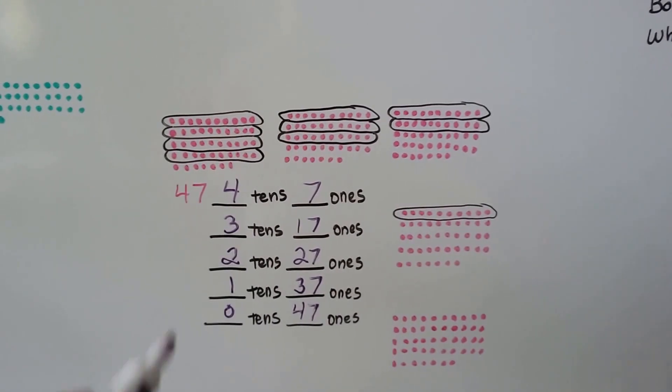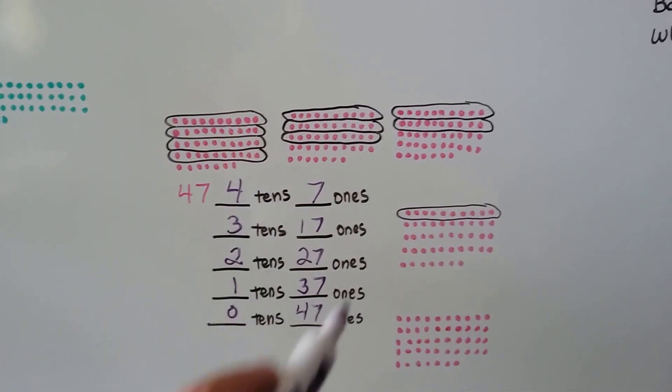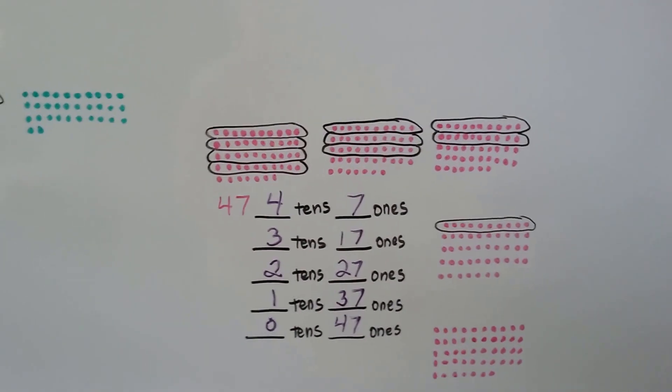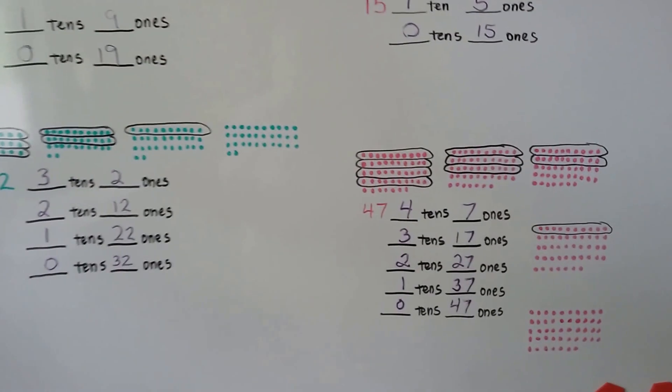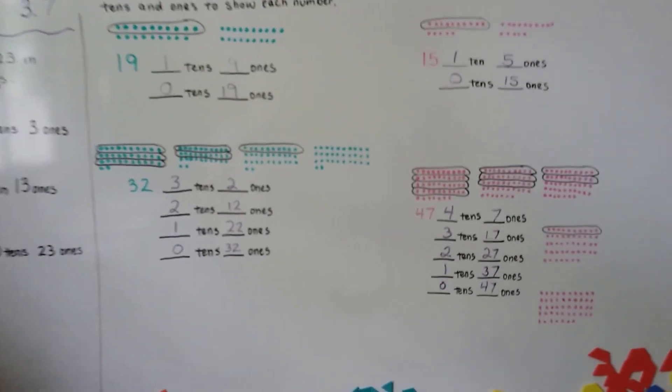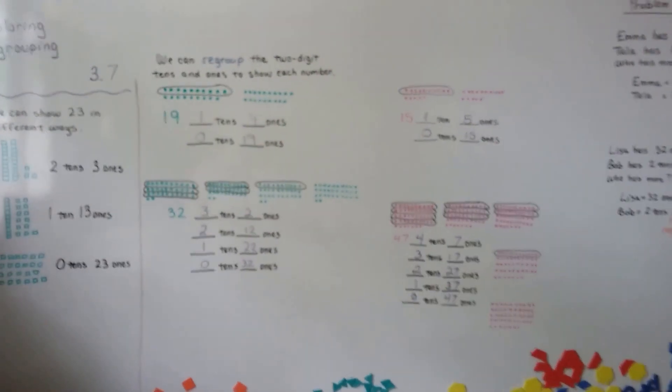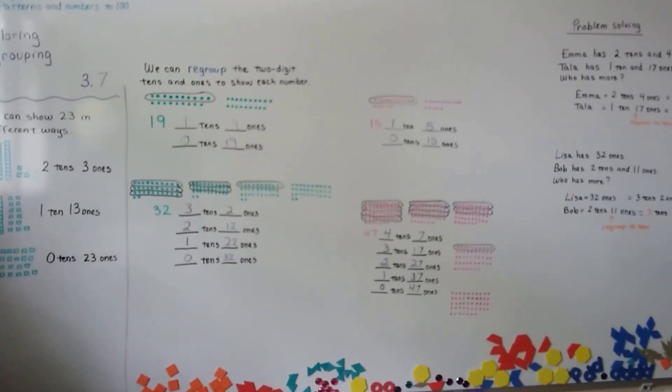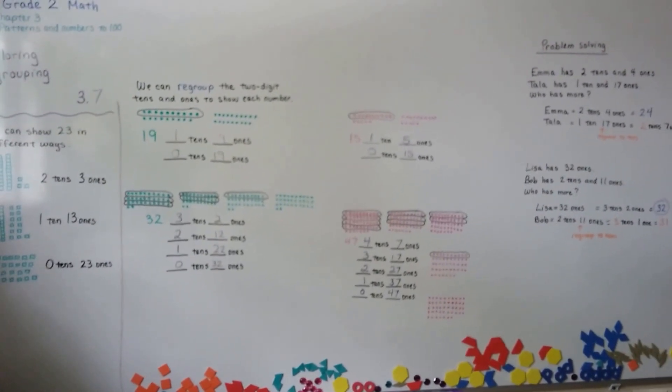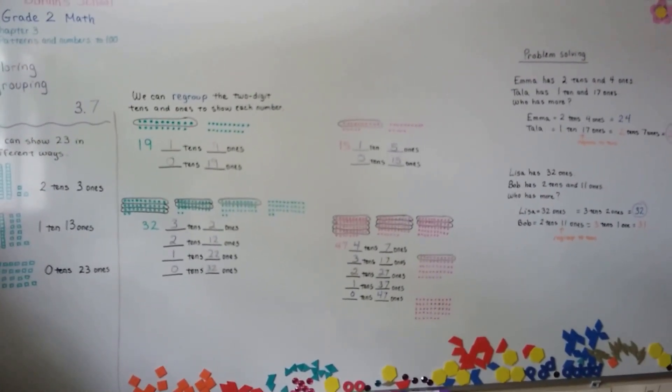And they're all 47. They all mean 47. They're just grouped differently. So that's regrouping. We're going to talk about that some more. I'll see you in the next video. Keep up the good work. Bye.